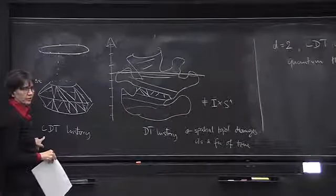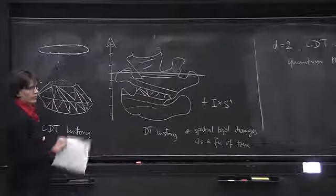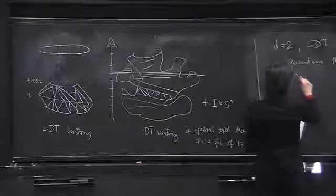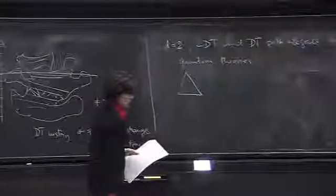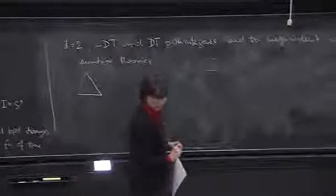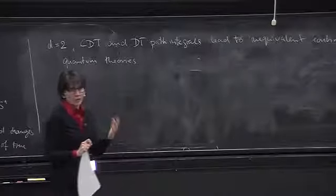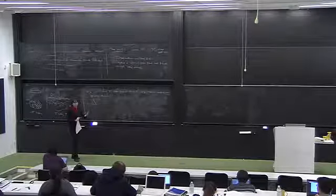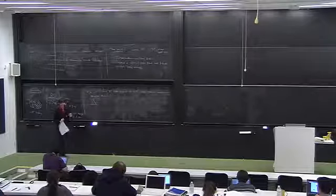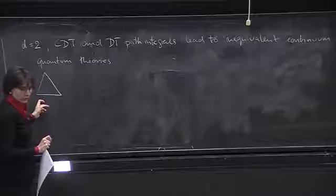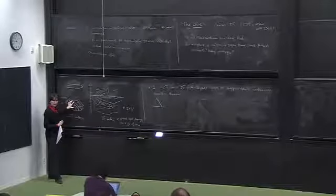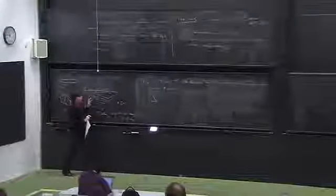In two dimensions, how does this Wick rotation work? There's always the problem that if you really insist on starting from a Lorentzian signature path integral that is non-perturbative, you can't simply appeal to Minkowski background structure and Osterwalder-Schrader axioms. What on earth is the Wick rotation in the first place? It turns out that these objects have a nice Wick rotation in the sense that there is a unique map of any one of these piecewise flat Lorentzian structures to a well-defined Euclidean structure.